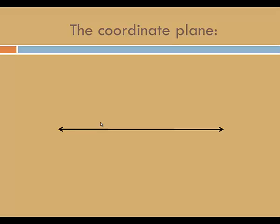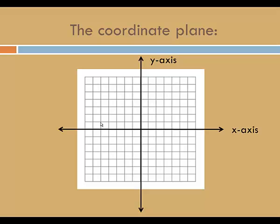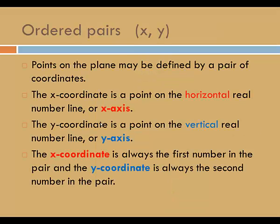So let's say that we start with a horizontal real number line. We'll call that an x-axis. And cross that with a vertical real number line. We'll call that a y-axis. We'll end up with a grid system and we call that the coordinate plane. Points on the plane may be defined by a pair of coordinates. The x-coordinate is a point on the horizontal real number line or x-axis. The y-coordinate is a point on the vertical real number line or y-axis. The x-coordinate is always the first number in the pair and the y-coordinate is always the second number in the pair.